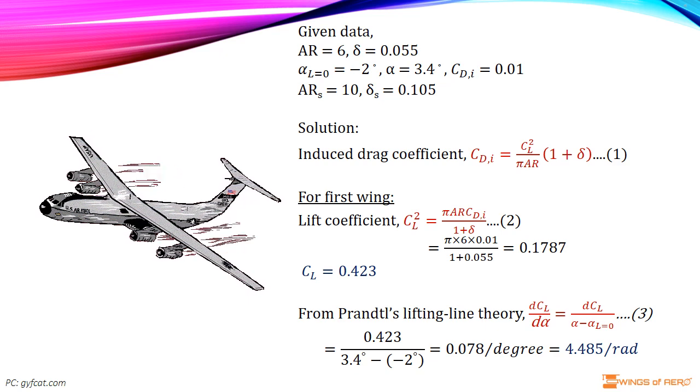Where CL is the lift coefficient, AR is the aspect ratio, and delta is the induced drag factor. We must recall that although the angle of attack is the same for the two cases compared here, the value of lift coefficient is different because of the aspect ratio effect on the lift slope.